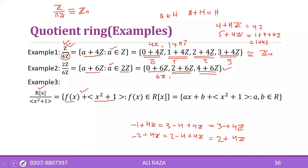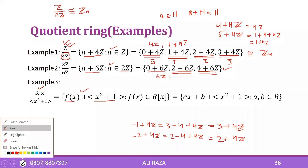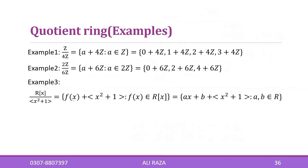Now, the third example is about the polynomial ring. To find its factor group: any function f(x), using the division algorithm, can be written as q(x)·(x² + 1) + r(x), where r(x) is the remainder.